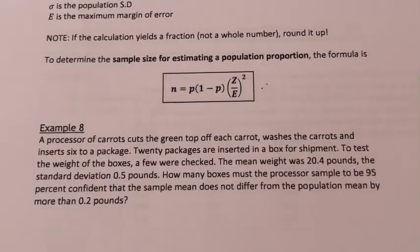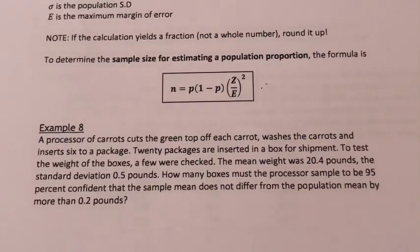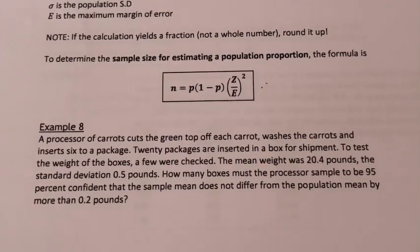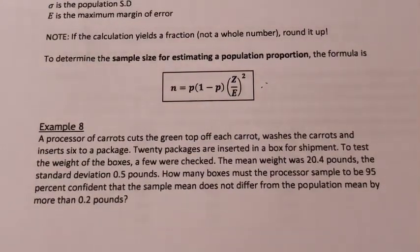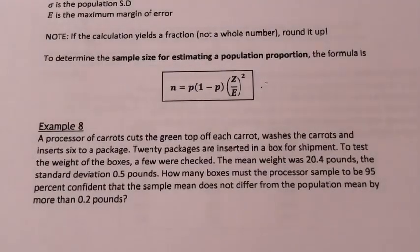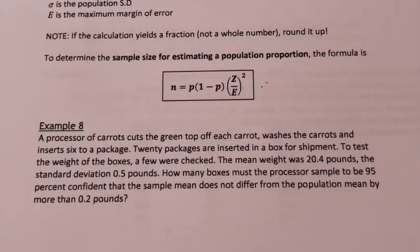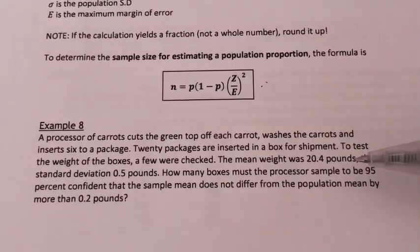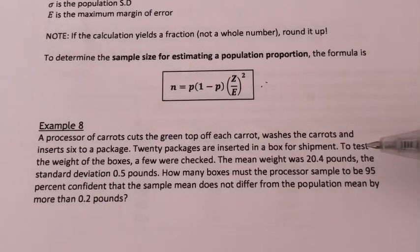A processor of carrots cuts the green top of each carrot, washes the carrots, and inserts six to a package. Twenty packages are inserted in a box for shipment. To test the weight of the boxes, a few were checked. The mean weight was 20.4 pounds and the standard deviation is 0.5 pounds. The question is: how many boxes must the processor sample to be 95% confident that the sample mean does not differ from the population mean by more than 0.2 pounds?